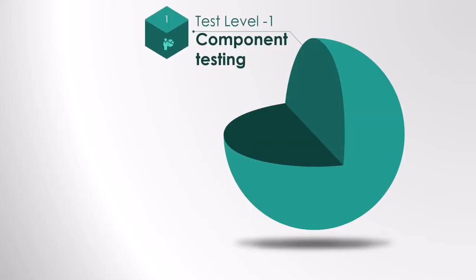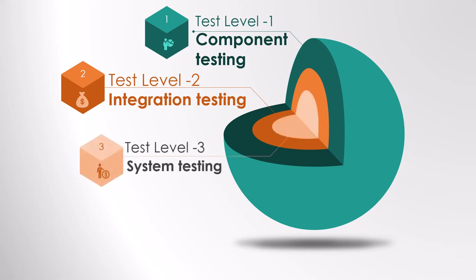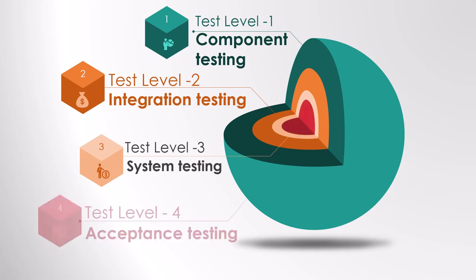The first test level is component testing. As soon as our code is ready, we'll perform the component testing. Once that is done, the next level of testing is integration testing, where you'll be able to see how two components or more interact with each other. Next, you will carry out the system testing, after which you will do the acceptance testing.